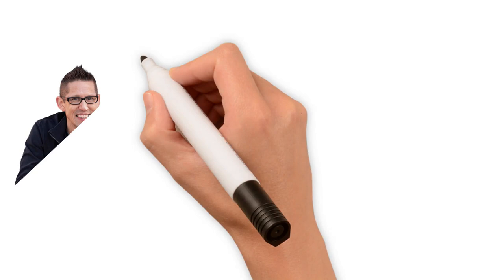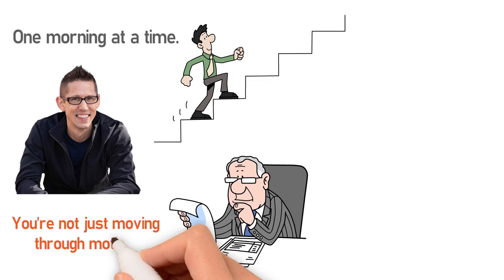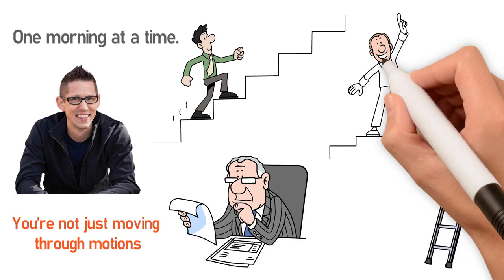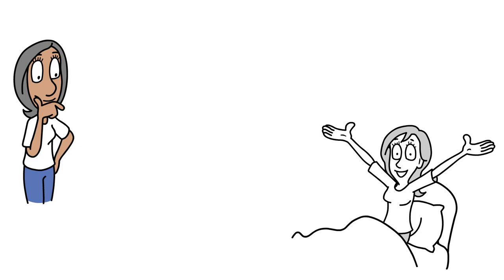Hal Elrod promises a life transformation one morning at a time. It's about incremental, consistent change. Each day you engage in this routine, you're not just moving through motions. You're building a ladder rung by rung towards the best version of yourself. It's a journey of personal evolution where each morning contributes a vital piece to your life's puzzle.